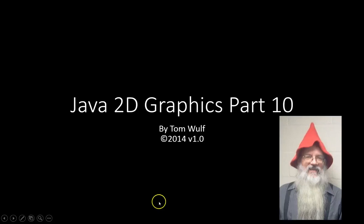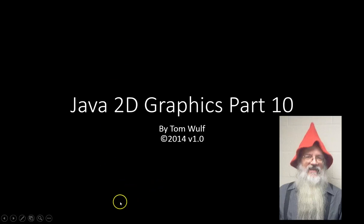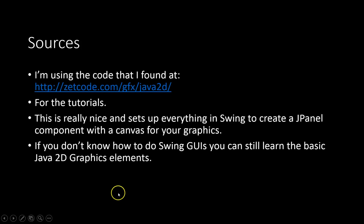Continuing with the J2D graphics, we're going to look at transformations. In this video I'm going to show two of the transformations: the translation and the rotation. I'm using the zetcode.com tutorial as a template to show these different transformations.